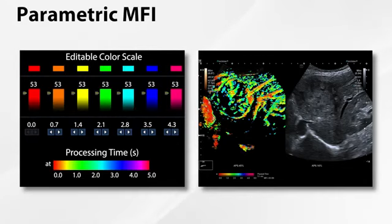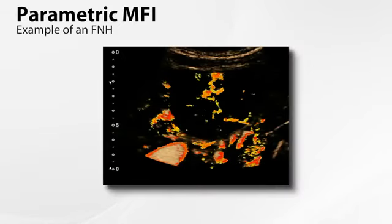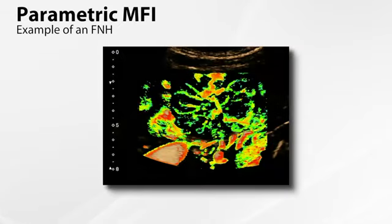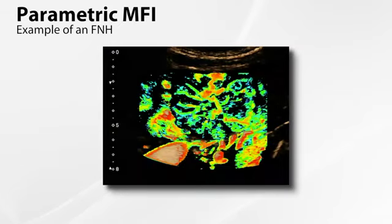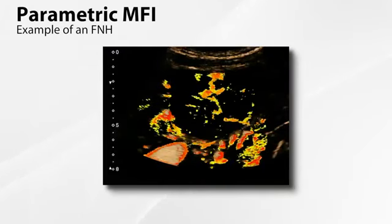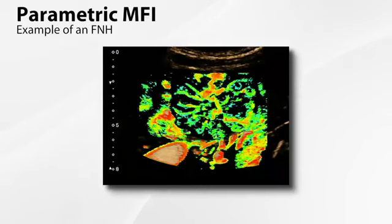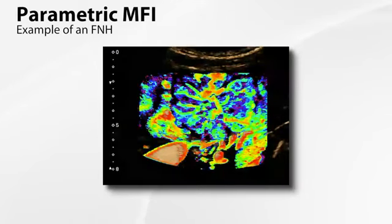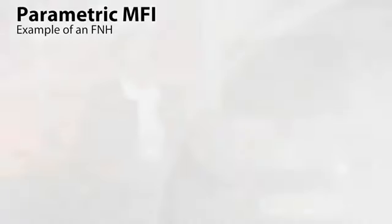This colour coding is editable, giving flexibility in identifying different stages of flow and their timings. Here's an example of an FNH. The delineation of the characteristic spoke wheel pattern is beautifully demonstrated. While this one was chosen to show the feature more clearly, the principle remains the same for those small ones where the vascular pattern can be very hard to see.